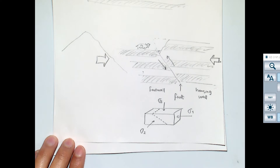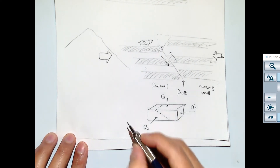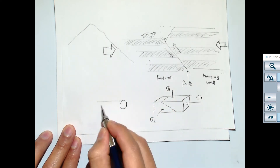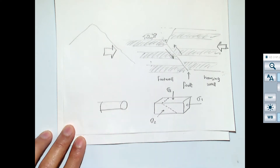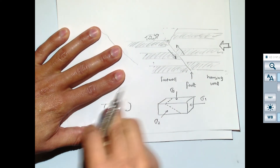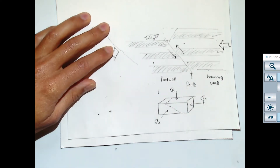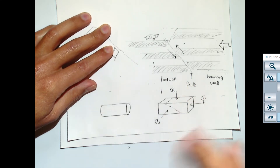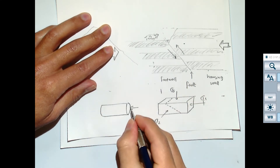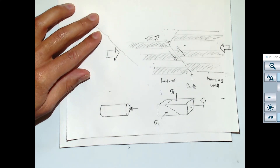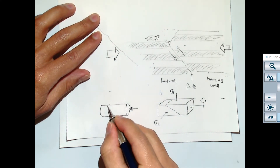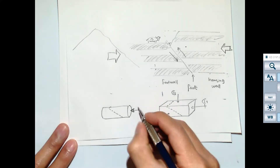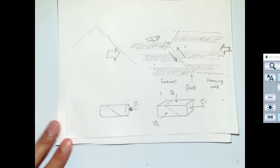Notice that now we're going to three dimensions. Remember what you did in the laboratory — and that's why the laboratory is very important, because you did it on your own and got to see how rocks break. What you were doing was failing the rocks by loading them parallel to the axis, and they always broke with a plane at an angle from the axial stress. This is exactly the same.